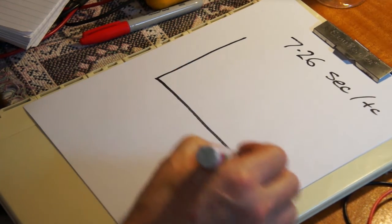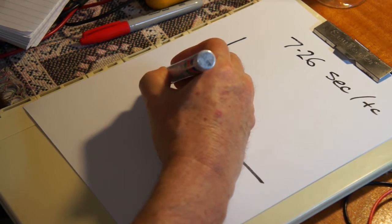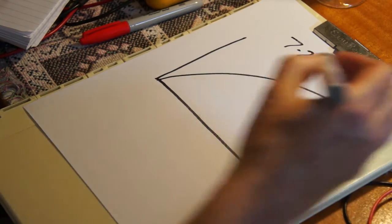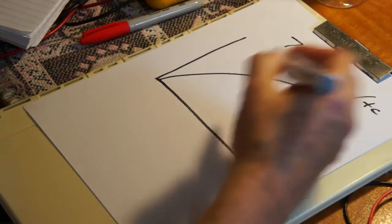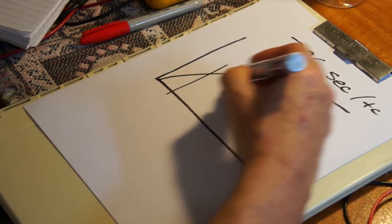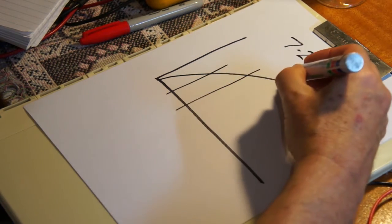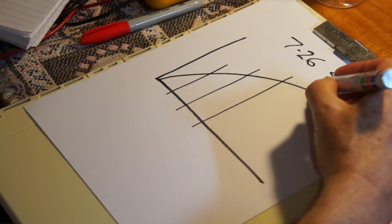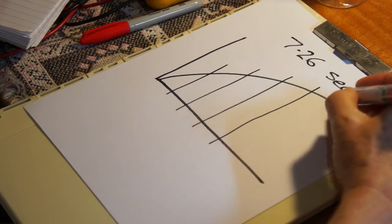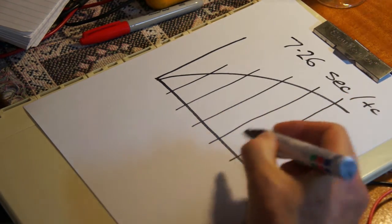We need a couple of axes set up for our graph and we need five divisions. So one, two, three, four, five, not so straight divisions.